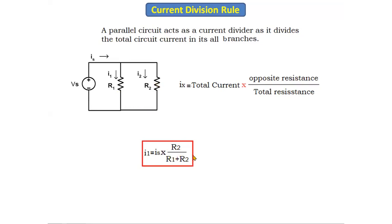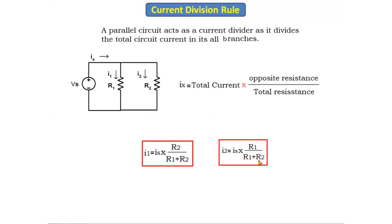So we write the equation for i1 as: i1 = Is × R2 / (R1 + R2). Similarly, for i2, the opposite resistance is R1, so: i2 = Is × R1 / (R1 + R2). In summary, the required current equals the total current multiplied by the opposite resistance divided by the sum of all the resistances.